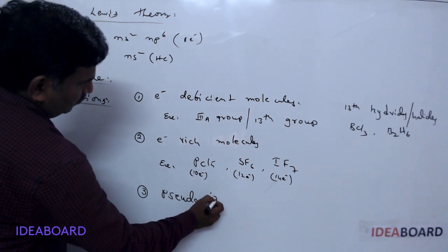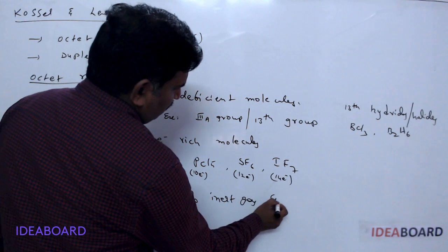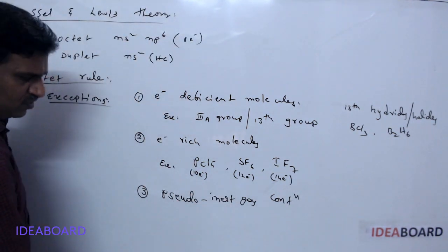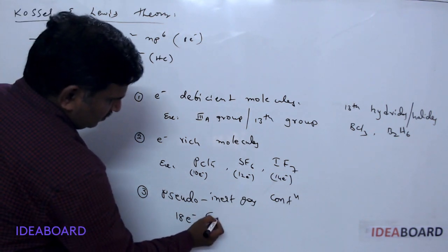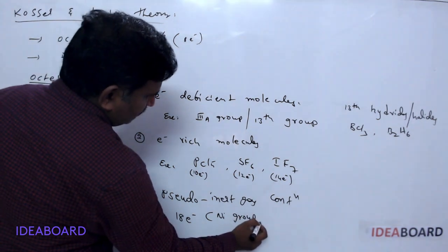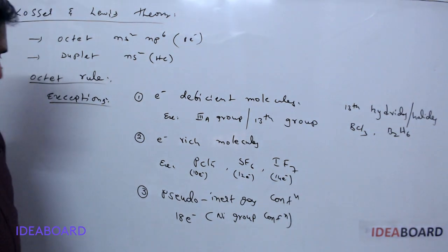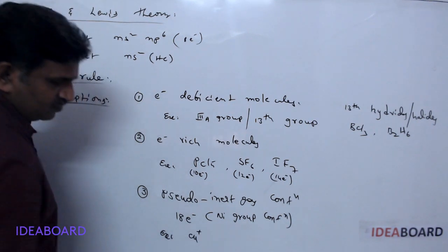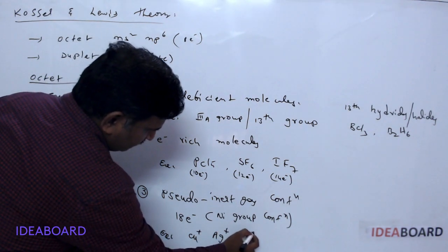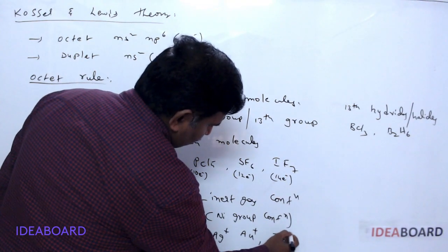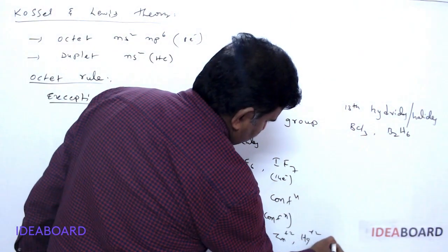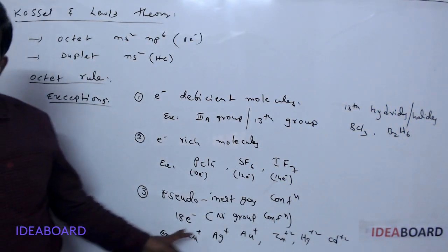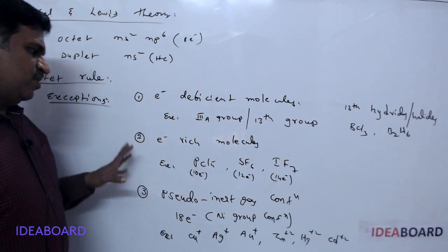The third type is pseudo inert gas configuration-containing molecules. These are molecules that contain 18 electrons in their valence shell. This is also called the nickel group configuration, or pseudo inert gas configuration. Examples include Cu⁺, Ag⁺, Au⁺, Zn²⁺, Hg²⁺, and Cd²⁺. These are called pseudo inert gas configuration-containing molecules.